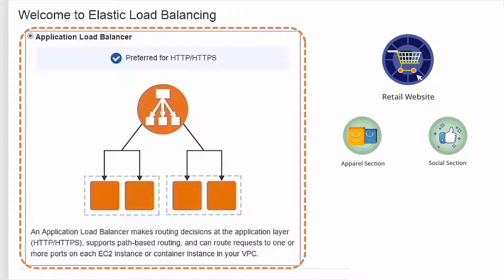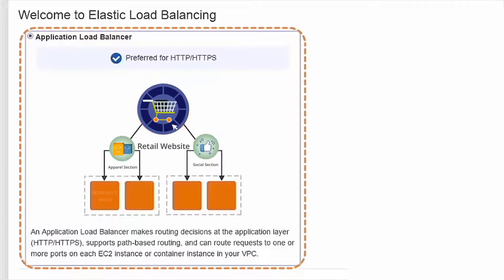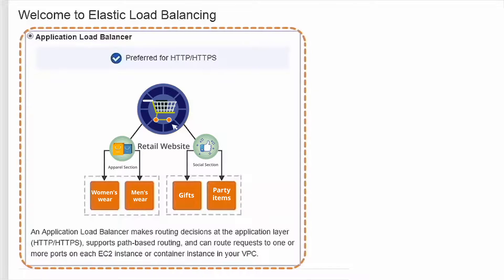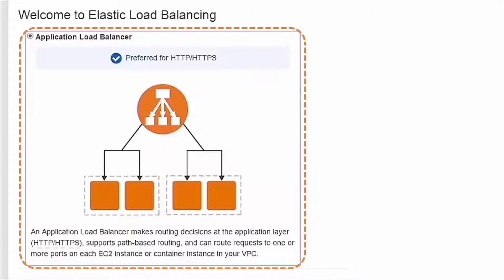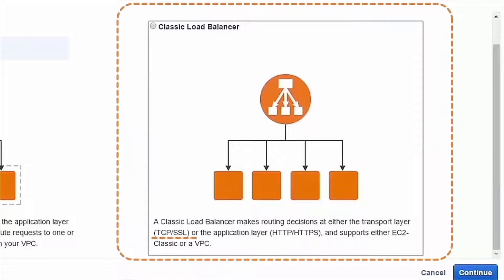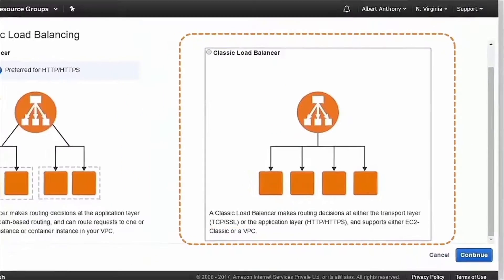What I can do is come over here, set up some target groups, and then distribute my load for all these sections of my website. Essentially, I can divert traffic, and I can do that all from here. This is available for HTTP and HTTPS. If you want to do load balancing at a network layer like TCP or SSL, then you would choose the classic load balancer.